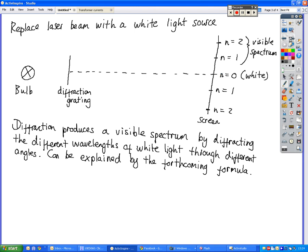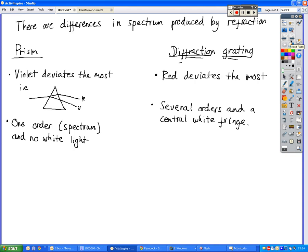So we see differences between that and the prism which uses refraction. In the prism, violet deviates the most—we've seen that because violet has a greater refractive index than red light does. We've only got one order, or one spectrum order, it's just another word for a spectrum of light. So just one run from red through to violet.